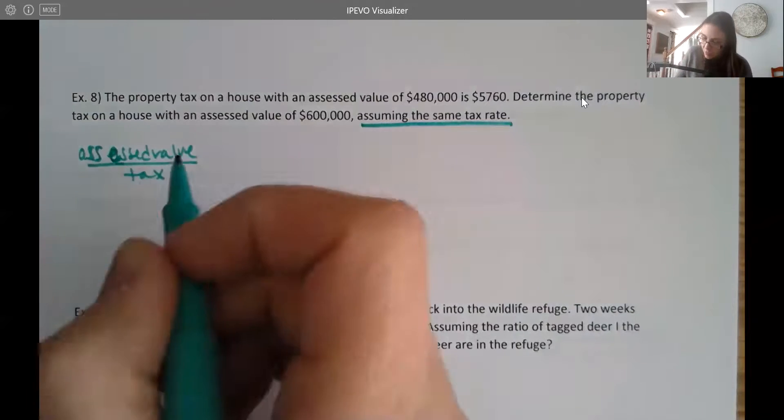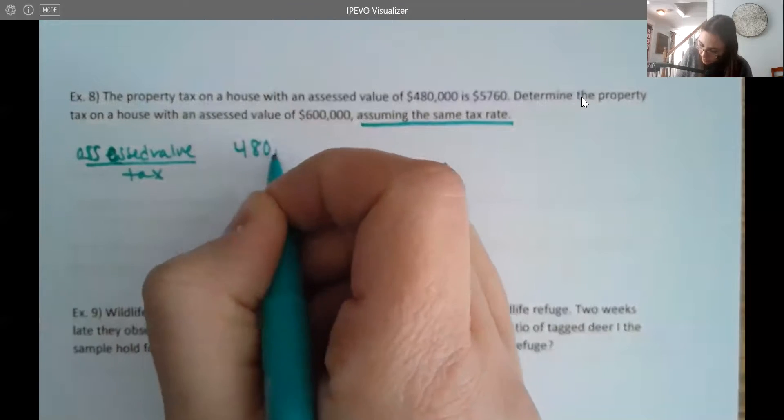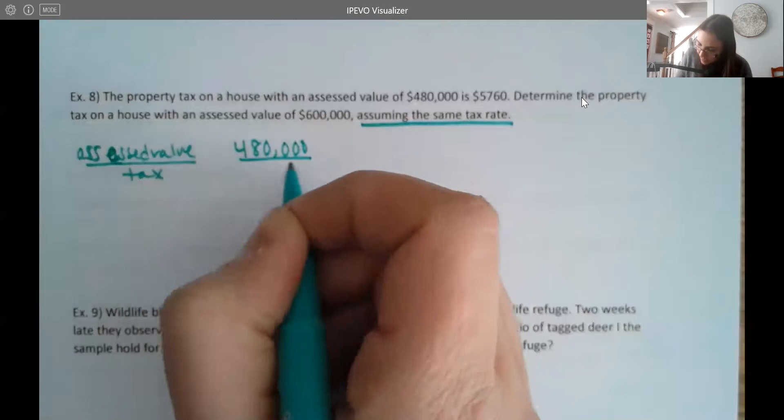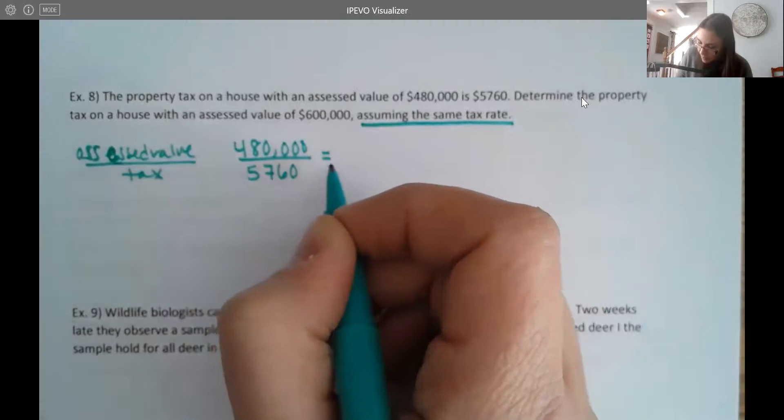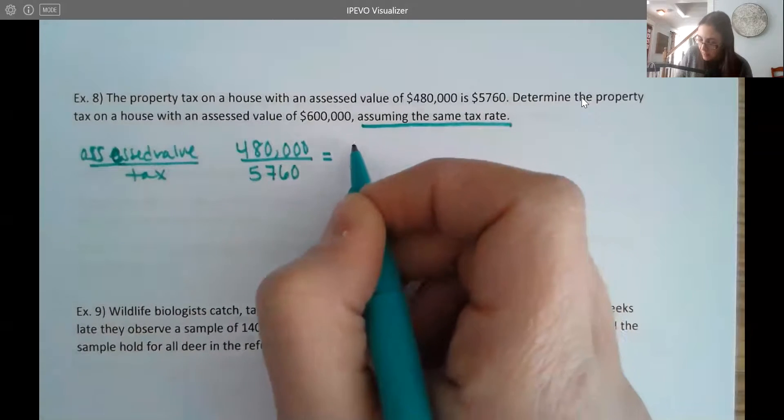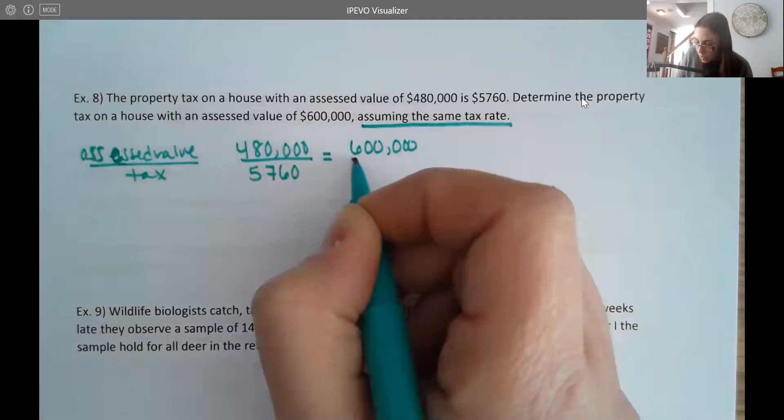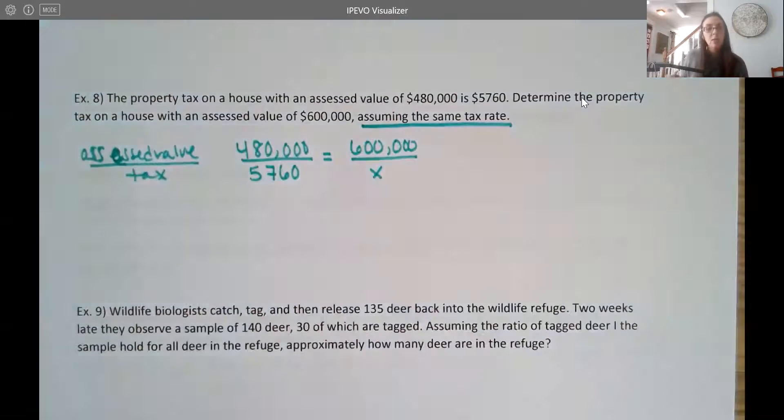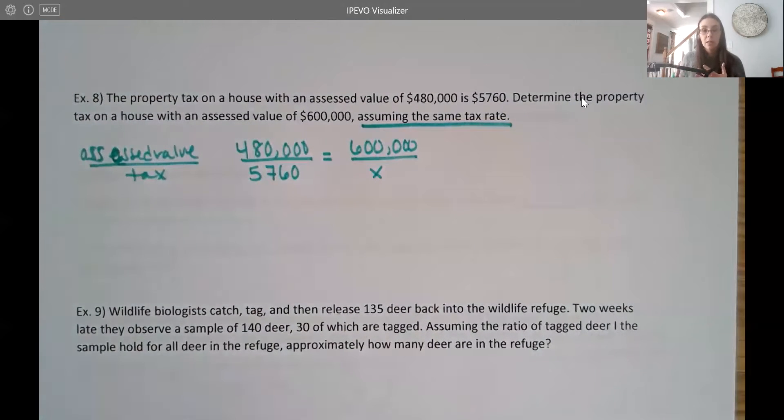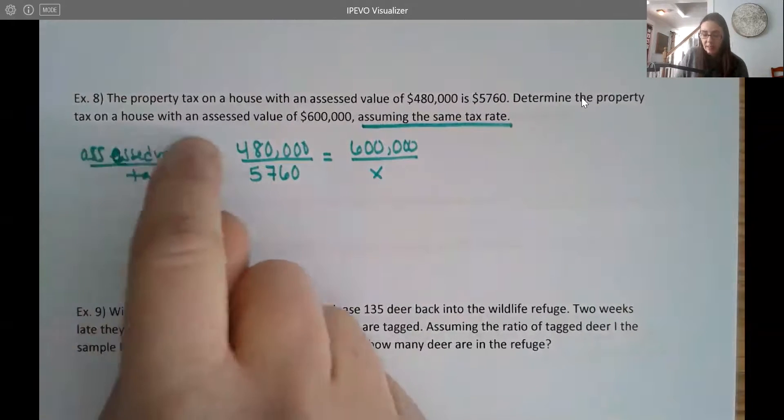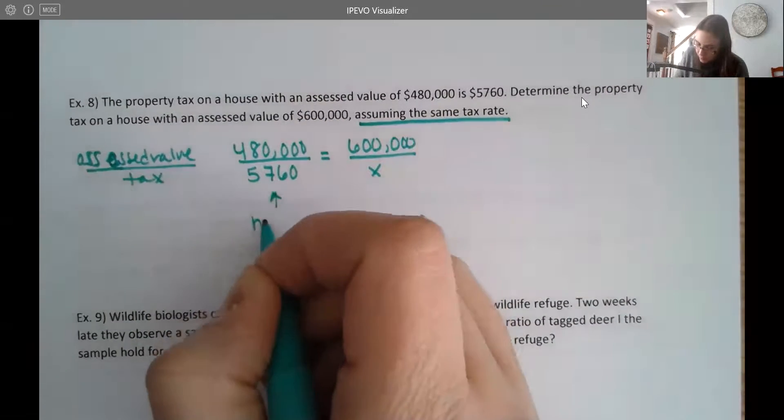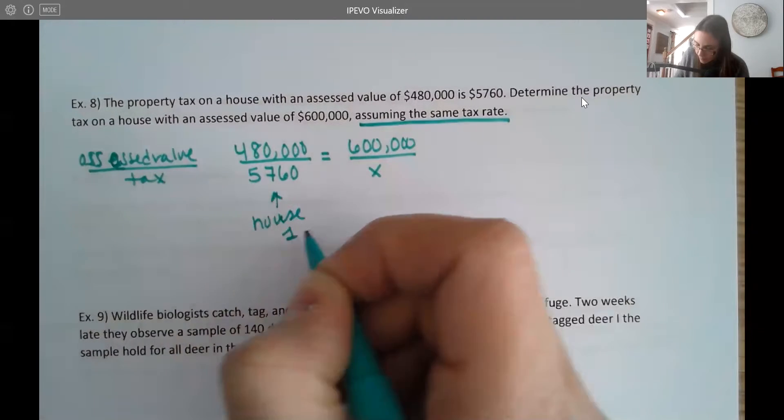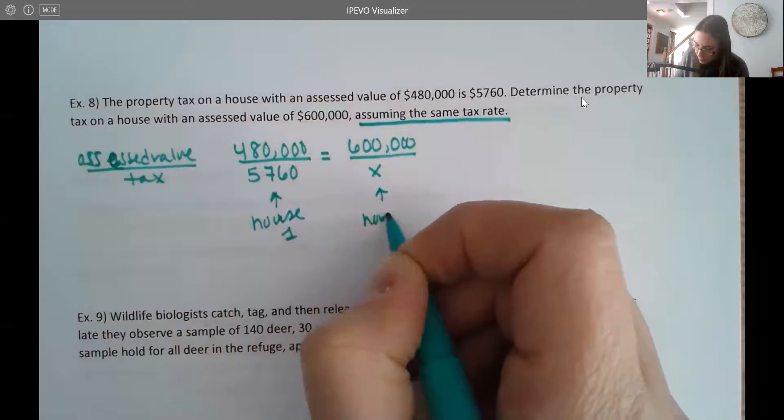So for our first example, our assessed value was $480,000, and the tax was $5,760. For the second house, the assessed value was $600,000, and we do not know the tax there. So I can use an X to hold that place. So notice that I'm just being consistent, which is really important. So I'm going to use the assessed value on top and the tax on bottom. And then this here is house one, and this here is house two.